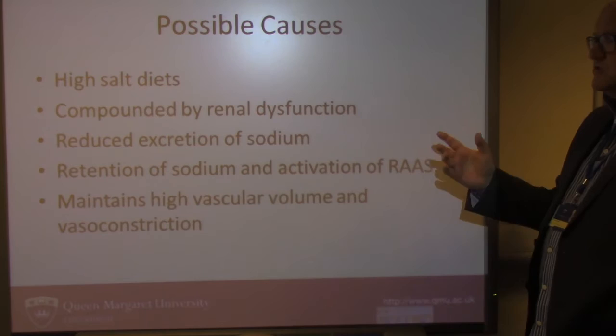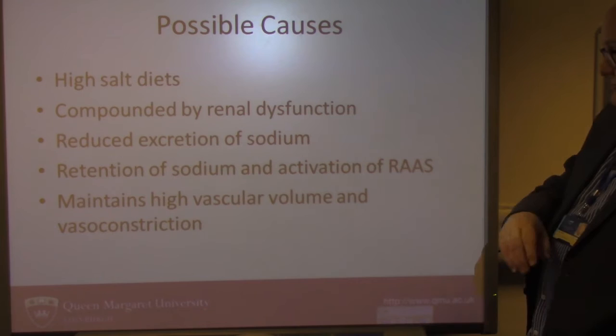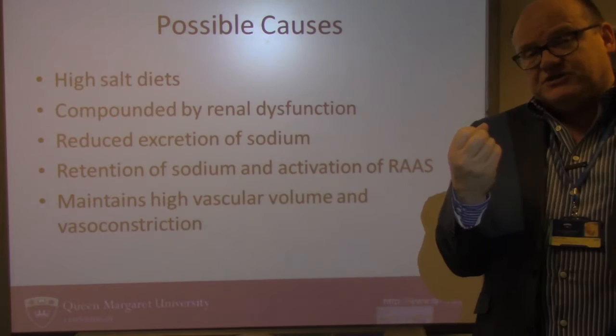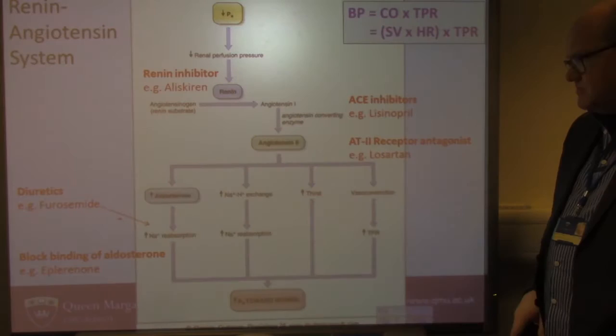Possible causes include all sorts of things: high salt diets affecting electrolyte balance, renal dysfunction, problems with excretion or retention of sodium, different levels of blood volume — so fluid retention would increase blood volume — and vasoconstriction, where blood vessels constrict, increasing total peripheral resistance. So there's a whole range of possible causes that could result in elevated blood pressure.